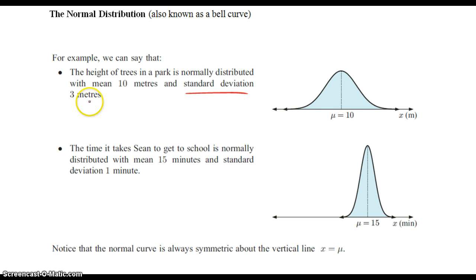You can see that standard deviation of 3 meters means there's more trees that are very tall or very short compared to the mean, versus if Sean goes to school and it's normally distributed with a mean of 15 minutes and standard deviation of 1 minute. Since the standard deviation is very low compared to the mean, it's a very narrow curve.